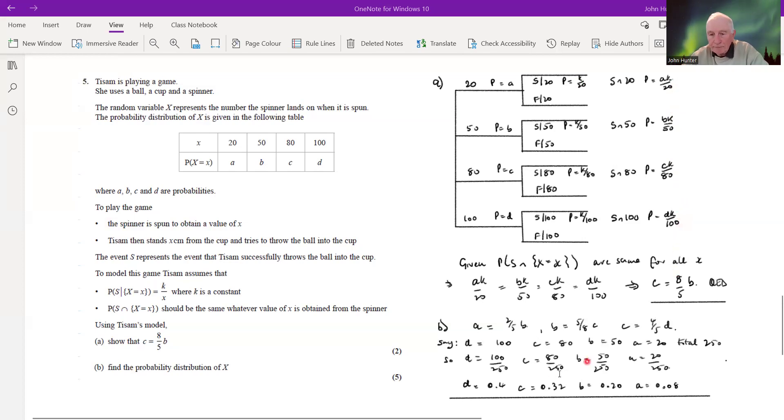So just to write that out, we've got ak by 20 equals bk by 50 equals ck by 80 equals dk by 100. And we can glean from that, from the middle two components of that string there, therefore that c is equal to eight fifths b. The k's cancel out and we're just left with that. So that is what we're asked to show for part A.